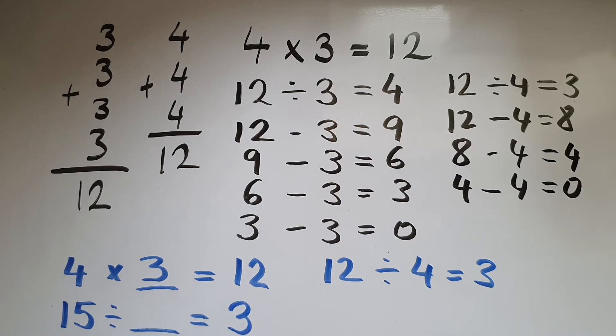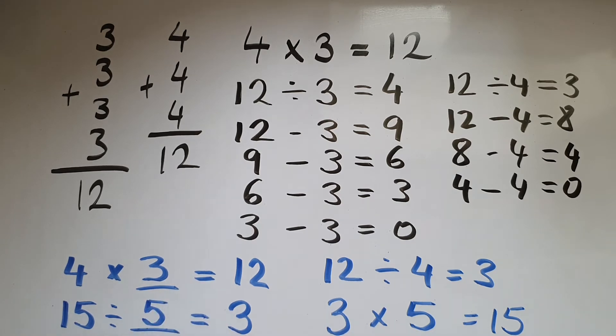So what's that number that I multiply by 3 to give me 15? That is 5. And same thing here, 15 divided by 5 gives me 3.